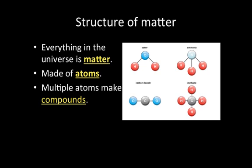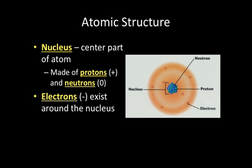If we look deeper inside an atom, we can see there are subatomic particles — things smaller than atoms. The nucleus is the center part of the atom and is very important because it contains protons, which are positively charged, and neutrons, which are neutral. Electrons are negatively charged and exist around the nucleus. So there are three subatomic particles: protons (positive), neutrons (neutral), and electrons (negative). Protons and neutrons make up the nucleus, while electrons surround it and move around in a random pattern.